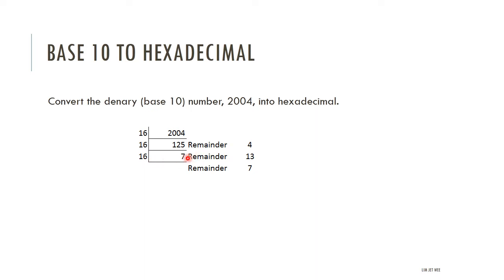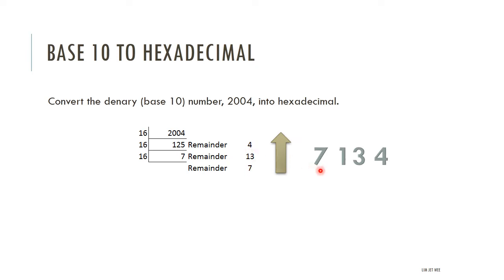That gives you the last remainder, which is 7. Now you have all the remainders. The next step: read them from the bottom upward. So the order is 7, 13, 4 — reading from the bottom. Don't make that mistake.